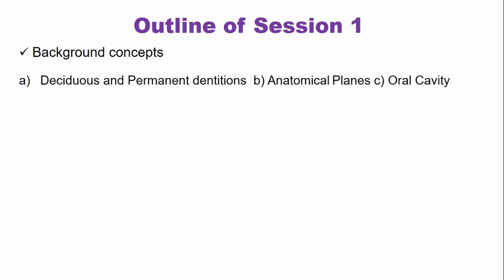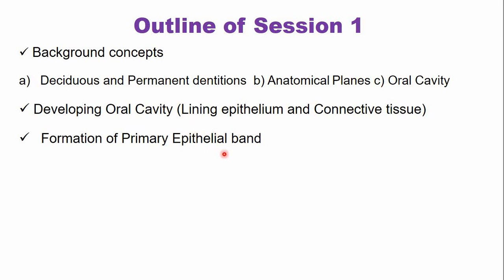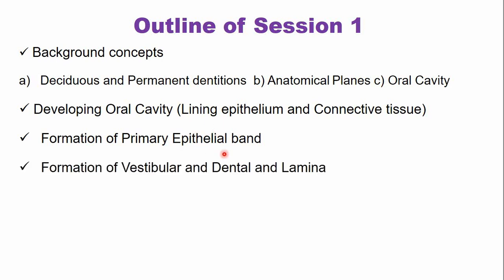So what we are going to cover — the session outline: we will discuss some background concepts like deciduous and permanent dentitions, very briefly the anatomical planes, and very briefly the structure of the oral cavity. We will discuss the developing oral cavity, its lining epithelium and the connective tissue. We will discuss the formation of the primary epithelial band and the structures derived from it — the vestibular and the dental lamina.